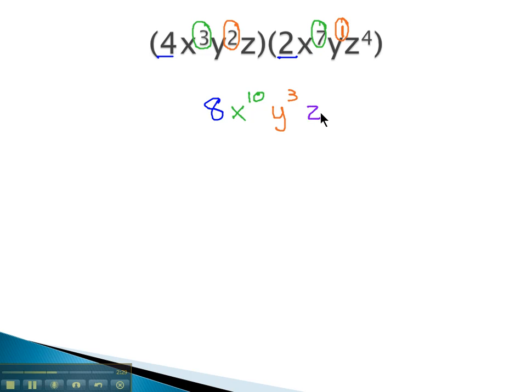Similarly, with the z's, we have 1 from the first monomial, 4 from the next. 1 plus 4 is 5, 5 z's multiplied together. By adding the exponents on the variables, we found our product to be 8x to the 10th, y to the 3rd, z to the 5th.